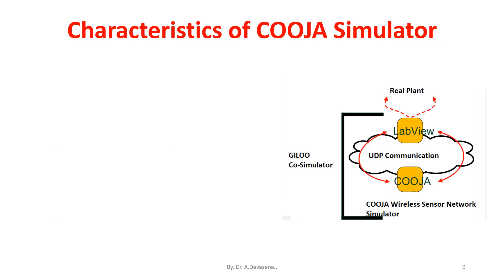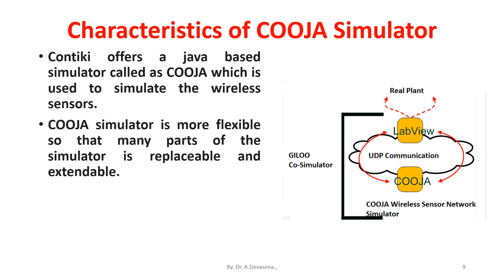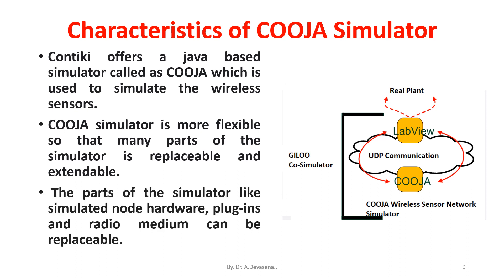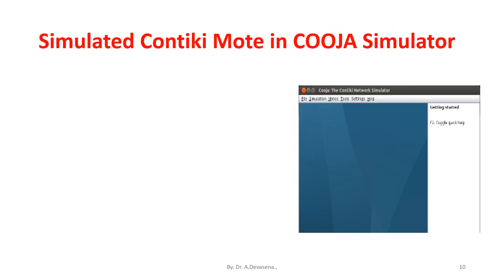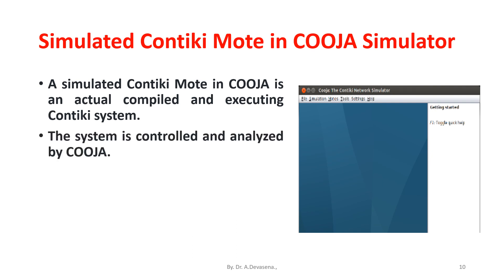Characteristics of Koja Simulator. Koja offers a Java-based simulator called Koja which is used to simulate the wireless sensors. Koja Simulator is more flexible so that many parts of the simulator are replaceable and extendable. The parts of the simulator like simulated node hardware, plugins, and radio medium can be replaceable. A simulated Kontaki node in Koja is an actual compiled and executing Kontaki system, controlled and analysed by Koja.